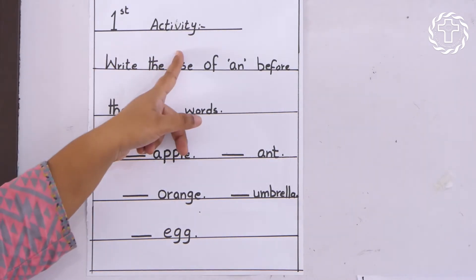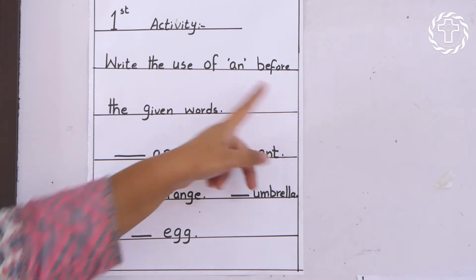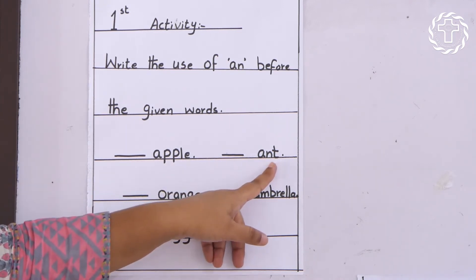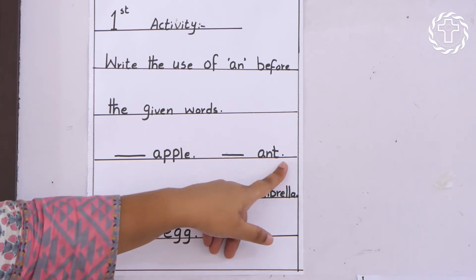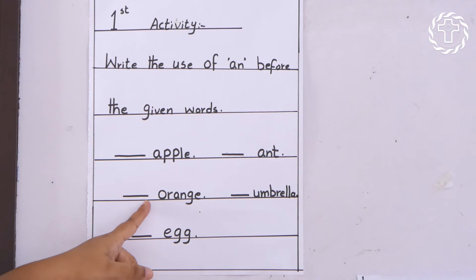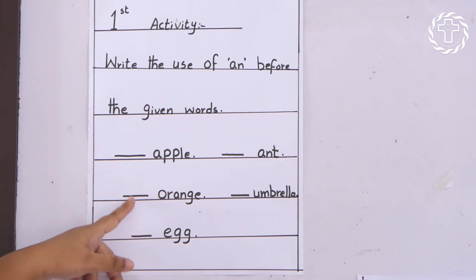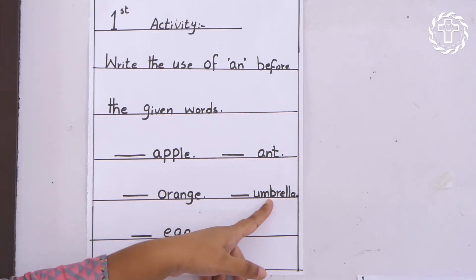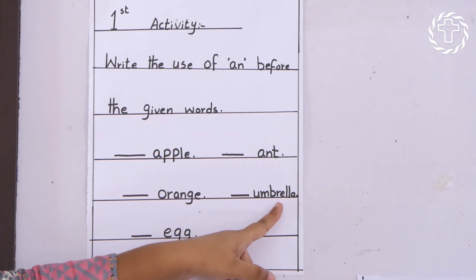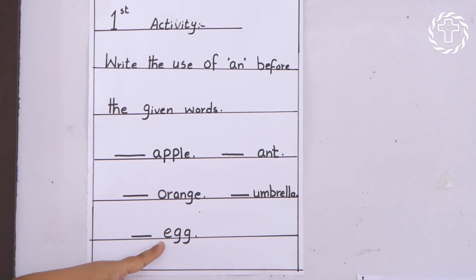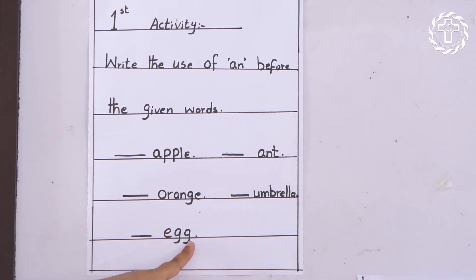This is your first activity: write the use of 'an' before the given words. Like apple — we use 'an' before a word: 'an apple'. The second word is 'and' — 'an and'. The third word is orange — 'an orange'. The fourth one is umbrella — 'an umbrella'. The fifth word is egg — we use 'an' before a word.